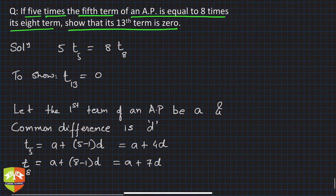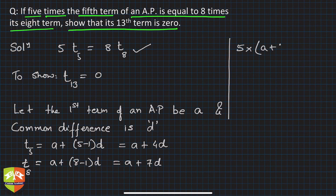Now, by this equation we can write: 5 times t₅, so what is t₅? It's a + 4d, which is equal to 8 times t₈, so a + 7d.